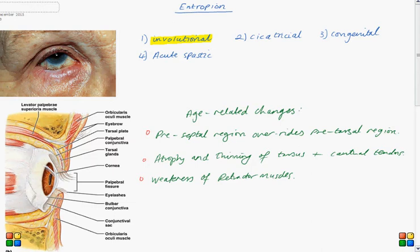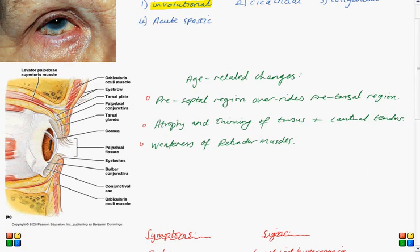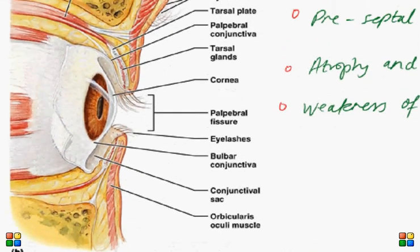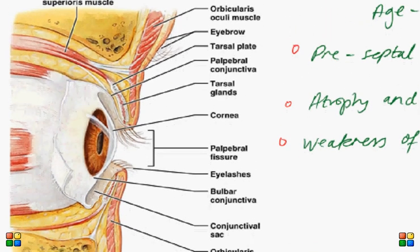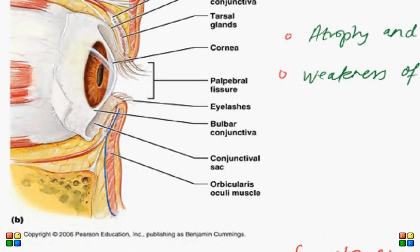Now this can arise as a result of a few age-related changes which in combination can cause the eyelid to invert. First, I'd like us to focus on this diagram here of the eyelids and in particular the orbicularis oculi muscle here on the lower lid.